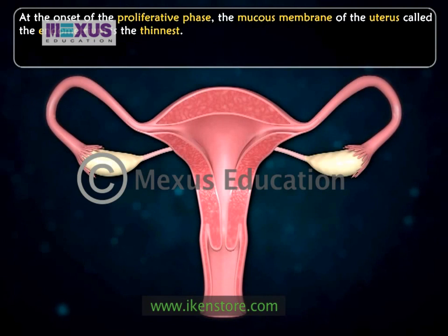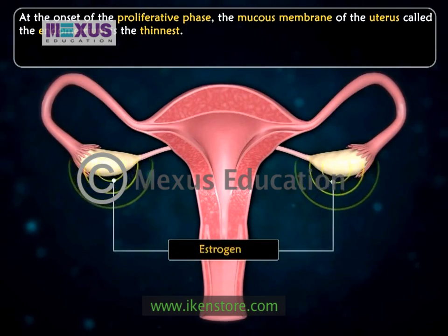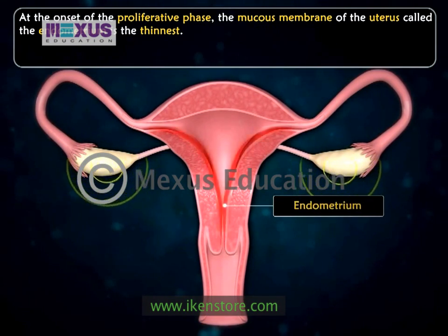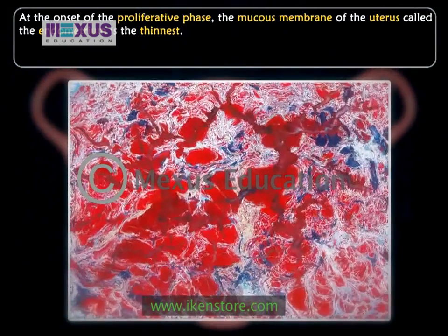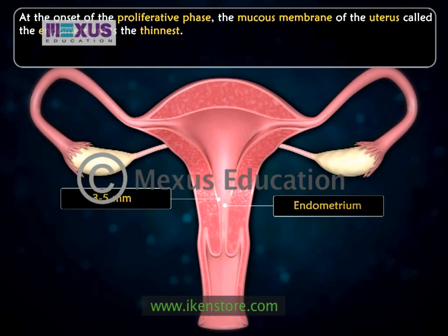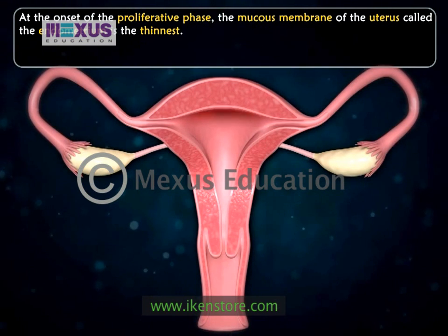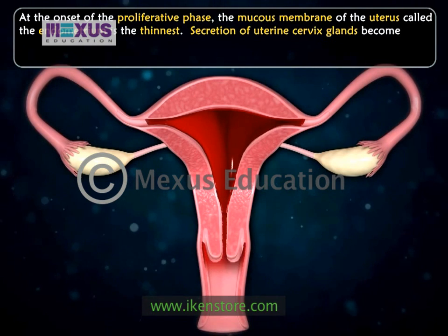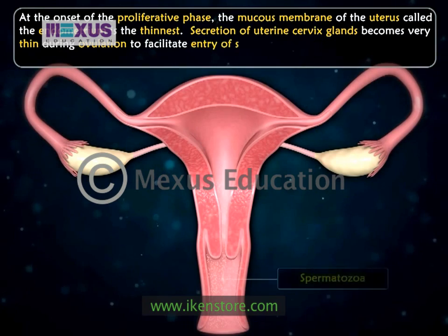The uterine changes begin due to rising concentration of estrogen. Gradually, endometrium glands grow in length, its epithelial cells proliferate, and the endometrial stroma and blood vessels grow. Just before ovulation, the endometrium becomes 3 to 5 mm thick. The myometrial contractions become more powerful and secretion of uterine cervix glands becomes very thin during ovulation to facilitate the entry of spermatozoa.